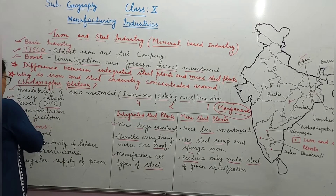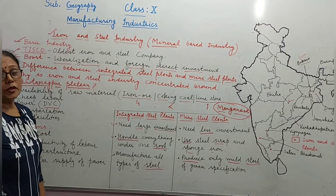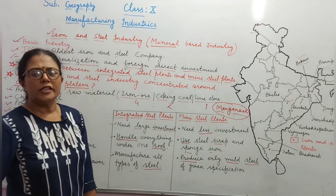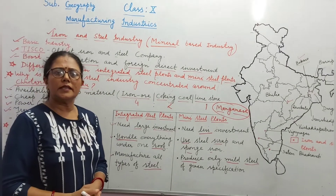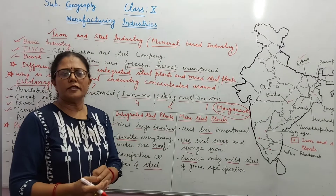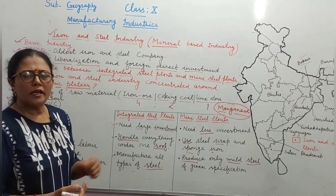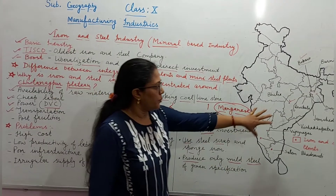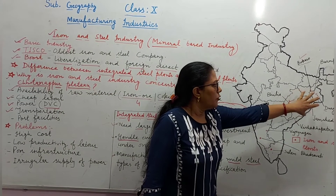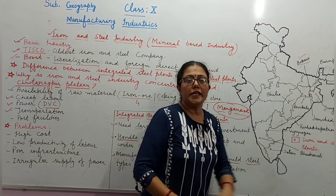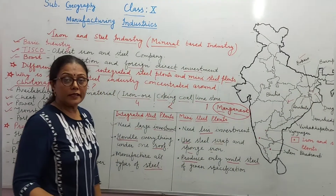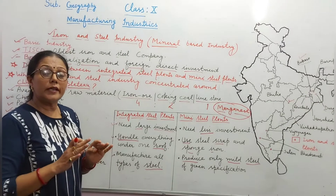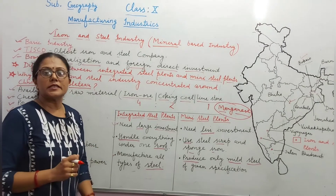अगला point है transportation। Iron and steel industry एक heavy industry है, यानि जितनी भी चीज़ें बनाई जाती हैं, यहाँ तक कि raw material भी heavy होता है। इसलिए इस area में transportation facilities काफी अच्छी हैं — roadways और railways का नेटवर्क काफी अच्छा है।